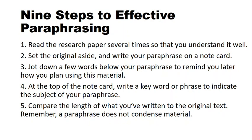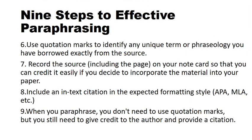Compare the length of what you have written to the original text. Paraphrasing is not about condensing the material — without losing the original essence, you have to write it out fully. Don't try to write briefly what they have presented; you have to write as they are but in new words, so you are not allowed to condense anything. Also, use quotation marks to identify any unique term or phraseology you have borrowed exactly from the source. If you want to use one particular line exactly as from the source, you can, but make sure you use quotation marks. When you paraphrase, record the source you are taking from, including the page number.